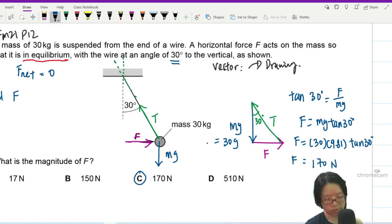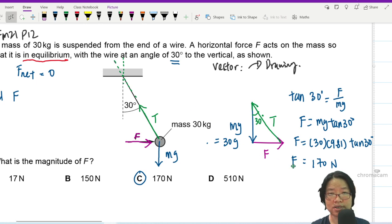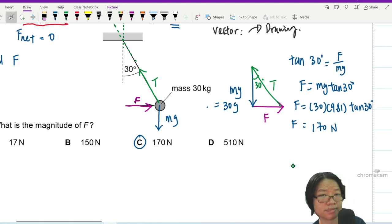So first method when you encounter vector is drawing. If you are a drawing person. And I think whenever there's right angle, triangle, drawing is faster. But if you're like, I don't like to draw. Can I resolve vector? Can. I will show you the second method now, which is resolution of vector.